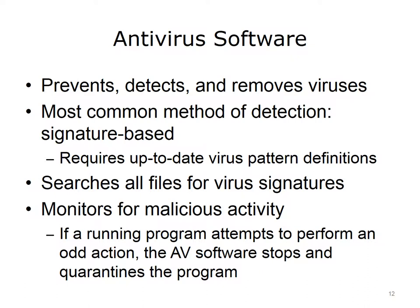AV software searches computer files for virus signatures and is able to determine if a file is infected with a virus. If the AV software finds what it sees as a virus, it quarantines the file. AV software also monitors for malicious computer activity. For example, if a running program attempts to perform an unfamiliar action, the AV software will stop and quarantine that program and its actions. For instance, if Microsoft Excel started a search or attempted to communicate over the network to a website without the user being part of that process, AV software should stop that from happening.